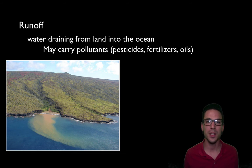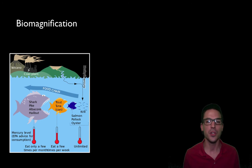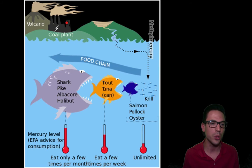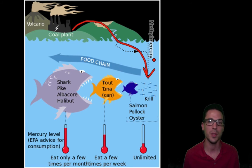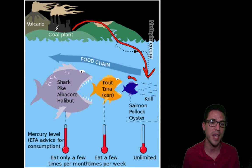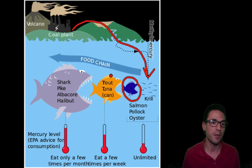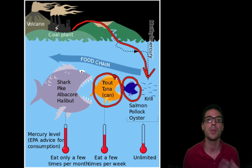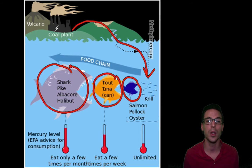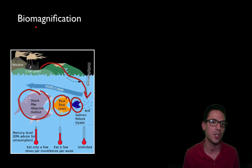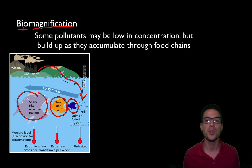Even when pollutants are at very low concentrations they are still dangerous due to biomagnification. For example, a coal plant releases mercury into the marine ecosystem at a low concentration, but it builds up as it moves through the food chain. A small amount is picked up by krill; a salmon eating a thousand krill accumulates a thousand times more mercury; a trout eating ten salmon accumulates even more; and a halibut eating ten trout gets yet more. Each step up the food chain the amount of mercury or any pollutant builds up — that's biomagnification.